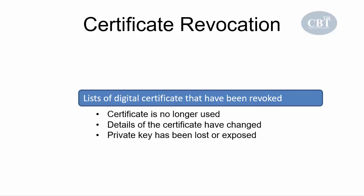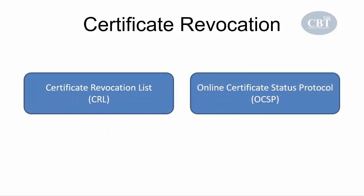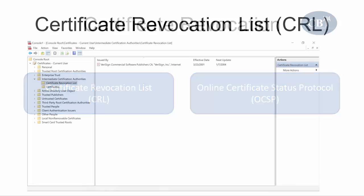Imagine someone has stolen your certificate and is using it to communicate with others. If the other party has no way to verify the certificate is invalid, their communication is not secure and sensitive information may be lost. We have two technologies to track invalid or revoked certificates: the certificate revocation list (CRL) and the online certificate status protocol (OCSP). The CRL is a file containing the serial numbers of all revoked certificates.